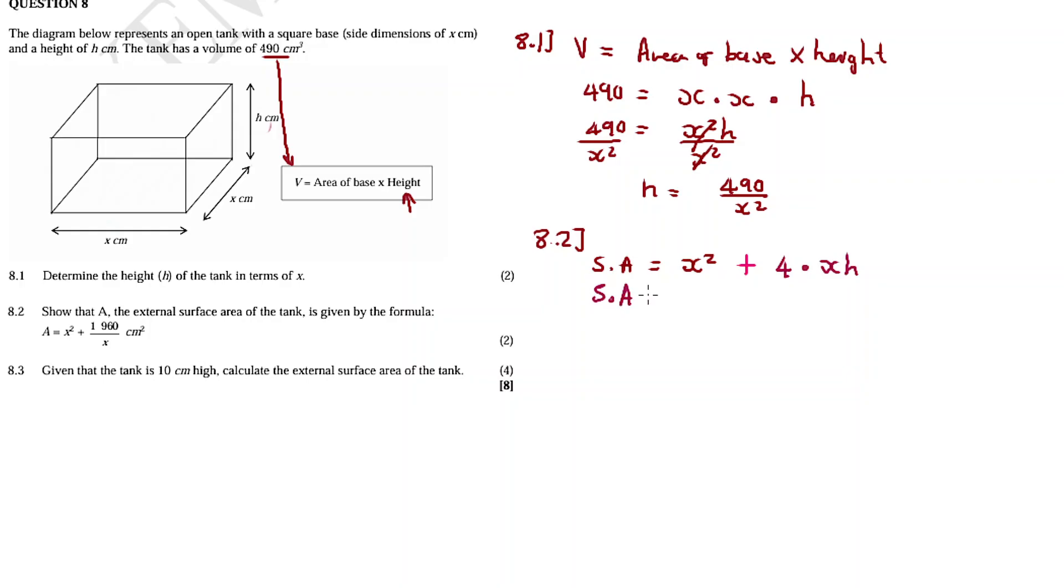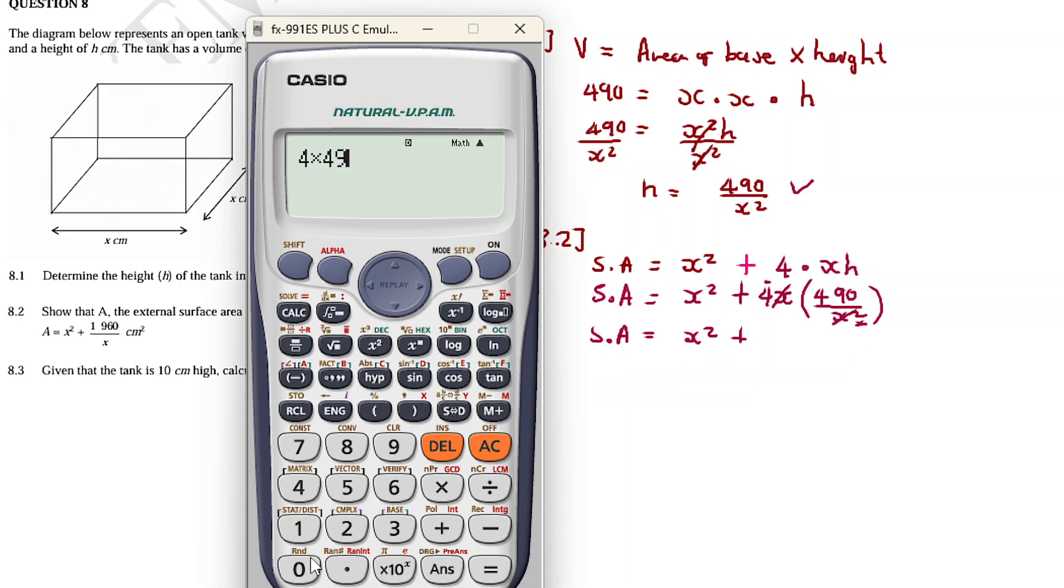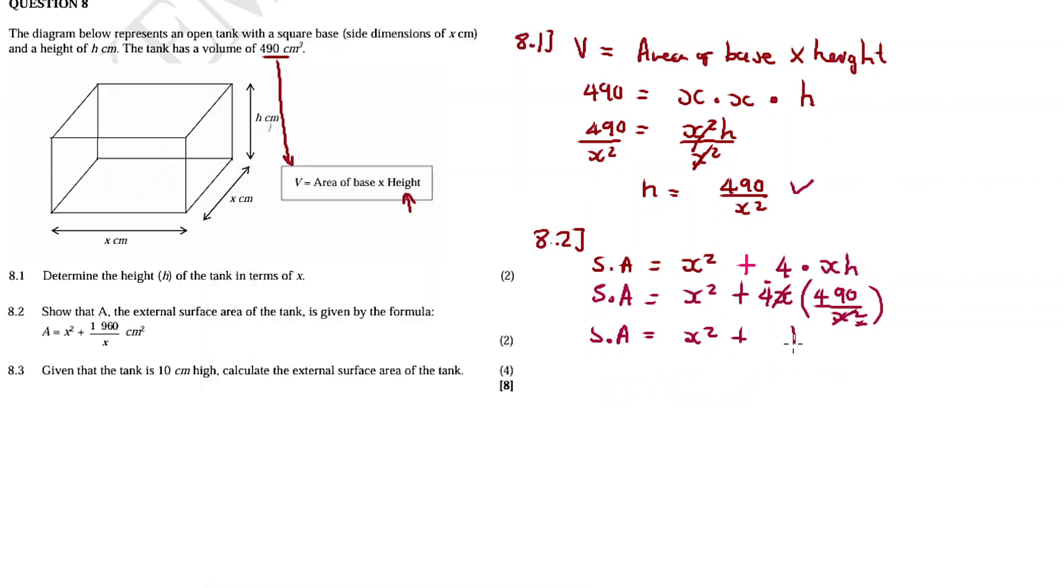Then the surface area we continue: x squared plus four x times h. I'm gonna put in the h that we calculated in 8.1, which was expressed in terms of x. So you see h, you put in the 490 over x squared like this. Then we continue: surface area x squared plus - x squared plus x, or one, will cancel on the x. This is x to the one. Then 4 times 490, what do we get? 4 times 490: 1960, divided by x. There, yeah, fine. Okay, it's the same, it's the same.